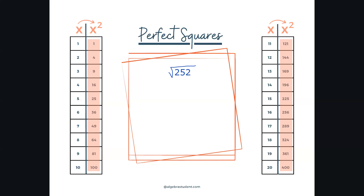All right, let's use perfect squares to find the square root of 252. You're going to need a perfect squares table, something like this one, and then your calculator.